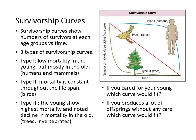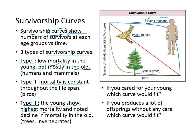We can also describe survivorship curves for different species. Type 1 involves low mortality in the young but most die when old — humans are considered Type 1. Type 2 has a roughly constant mortality rate throughout the lifespan, as seen in birds. Type 3 shows that the young have the highest mortality and it declines as they age, seen in trees and invertebrates.